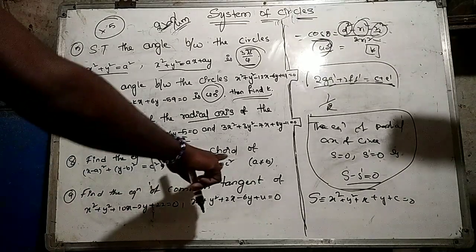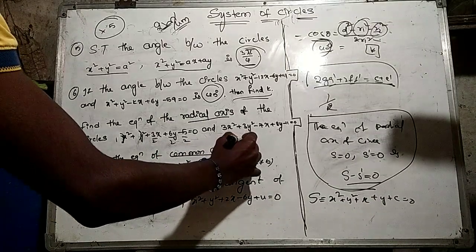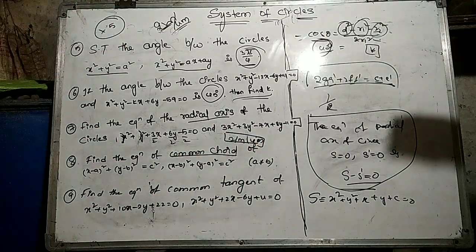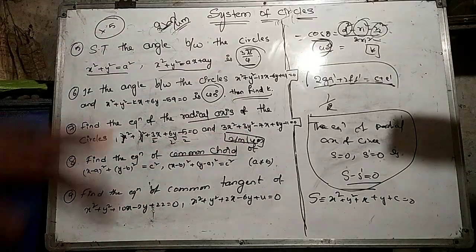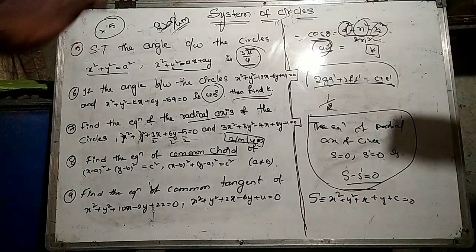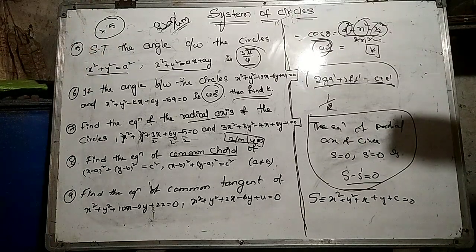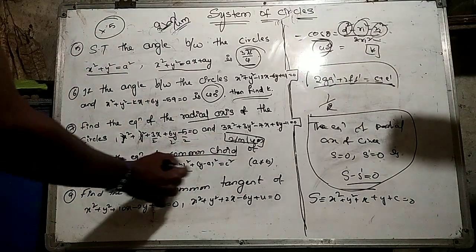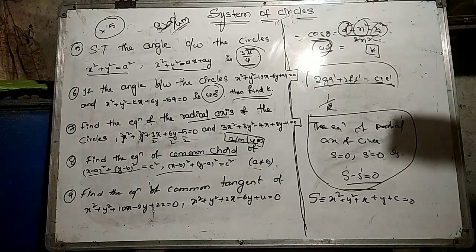The eighth question: find the equation of the common chord. The common chord appears in 2-mark and 4-mark questions. In 2022, the model paper changed for this system of circles chapter — one 4-mark question, one 2-mark question, one 7-mark question.